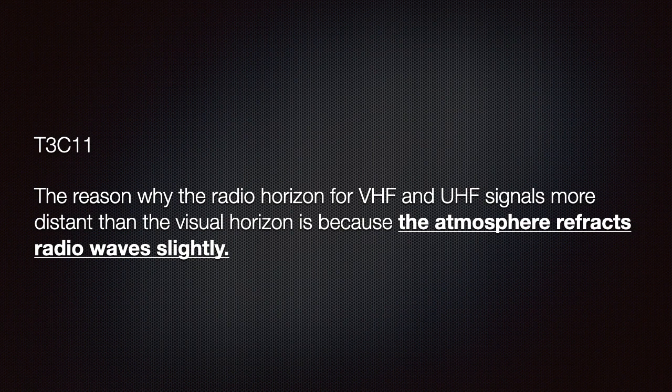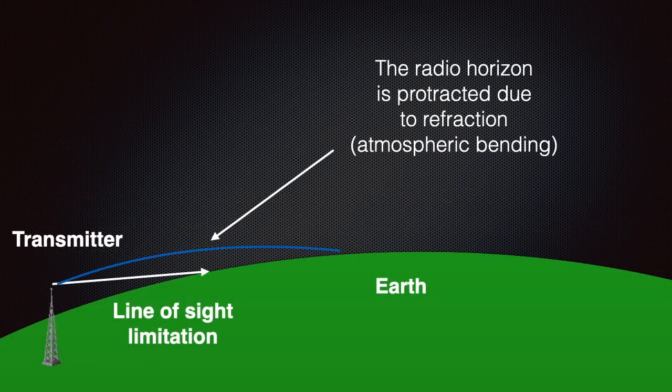We need to know that the reason why the radio horizon for VHF and UHF signals is more distant than the visible horizon is because the atmosphere refracts radio waves slightly. Radio waves, like light, love to travel in a straight line, but both can slightly bend under the right conditions. Atmospheric refraction causes such deviations of electromagnetic waves as they pass through the atmosphere, and variation in air density can cause a slight bending of the waves.